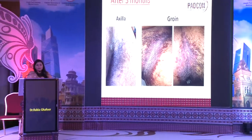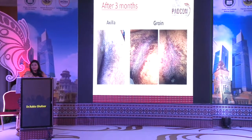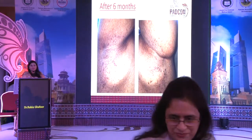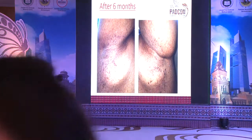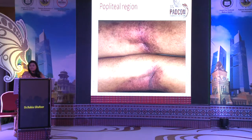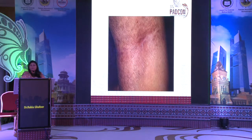This is the response of the patient after three months of therapy with low-dose naltrexone, and this is after six months of therapy. The patient has shown clearance of the lesions. This is the popliteal region after three and six months of therapy. This is the submammary area after three months and six months.